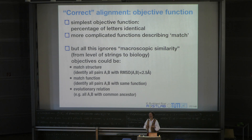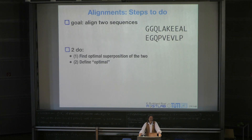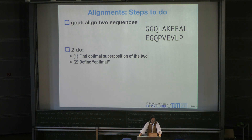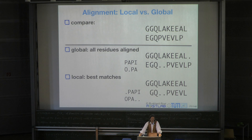But this completely ignores what you're after. The match score, whether you count identity of residues or look at something more complex, does not ask: can I group meaning, can I group function, can I group things together that are more similar in their structure? We are just looking at sequences. So for now let's stick to that—we are comparing strings. There are two tasks: we have two sequences and we want to find the optimal superposition given the objective function of maximizing identical letters. First you need to find the optimal superposition, and then you need to define optimal.